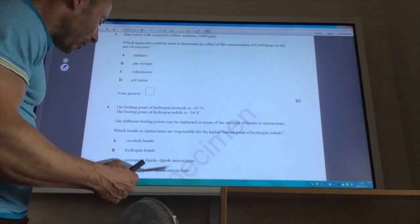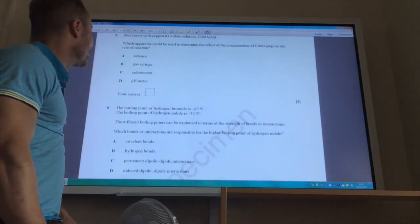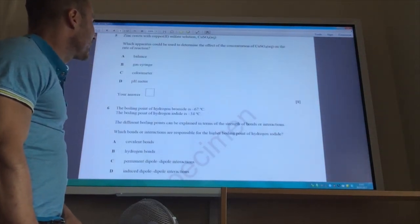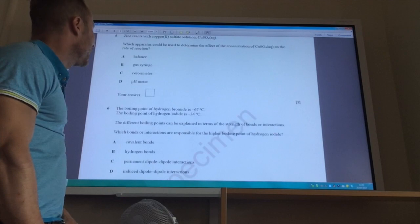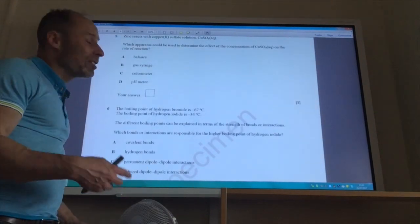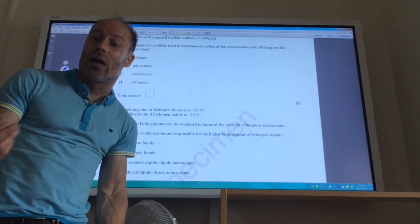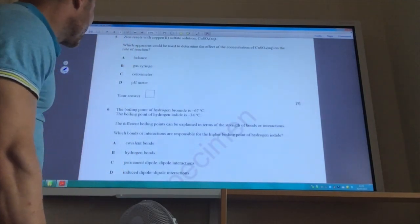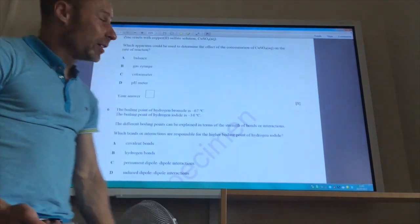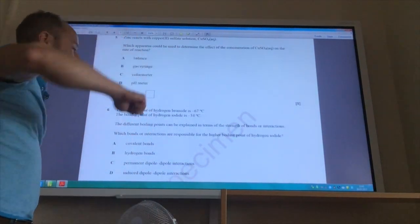Let's go for question five then. Zinc reacts with copper sulfate solution. Which apparatus could be used to determine the concentration of copper sulfate? Well obviously, as zinc reacts with copper sulfate, the blue colour of copper sulfate is going to disappear. It will become colourless. So you're looking for something that can detect a colour change. So the answer of course is C, a colorimeter.